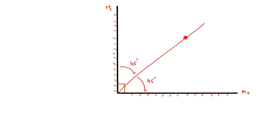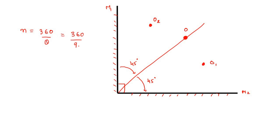If I place an object on this angle bisector, the object is said to be symmetrically placed. Suppose there is an object not on the angle bisector — it may be above or below it. Let's call the symmetric object O, and the non-symmetric objects O1 and O2. Object O is situated symmetrically with respect to both mirrors, lying on the angle bisector, while O1 and O2 are not. We can also apply the formula n = 360 divided by theta, where theta is the angle between both mirrors. So 360 divided by 90 gives 4, and since 4 is an even number, n minus 1 — that means 3 — will be the number of images, irrespective of the position of the object whether symmetrical or non-symmetrical.